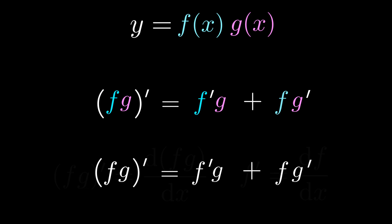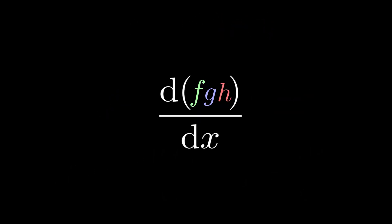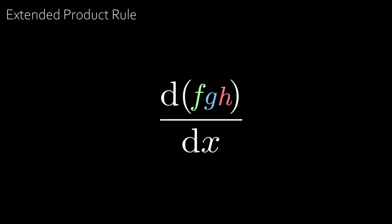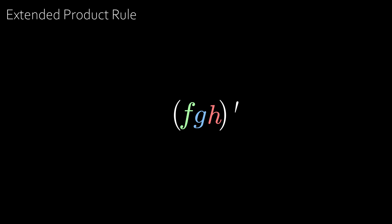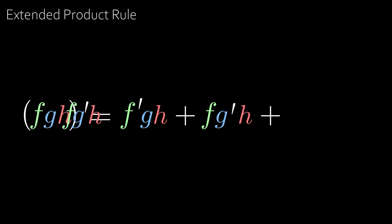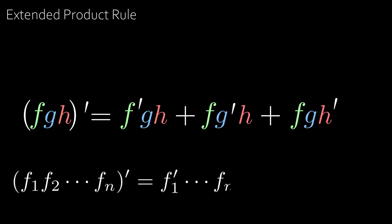What if we had three functions multiplied together, or n functions multiplied together? We need the extended product rule. For three functions, (fgh)' equals the derivative of the first multiplied by the other two, plus the derivative of the second multiplied by the other two, plus the derivative of the third multiplied by the other two. For n functions, take the derivative of one and multiply it by the rest, do this for each function, and add them all together.